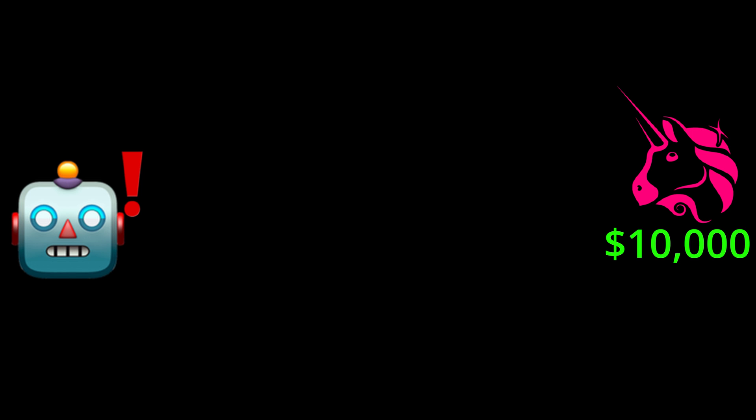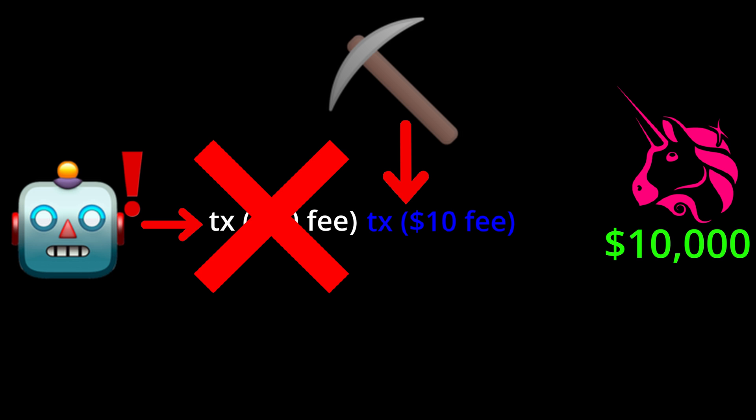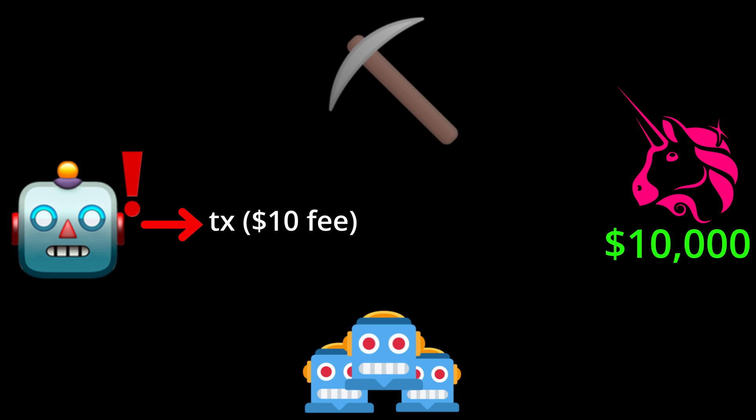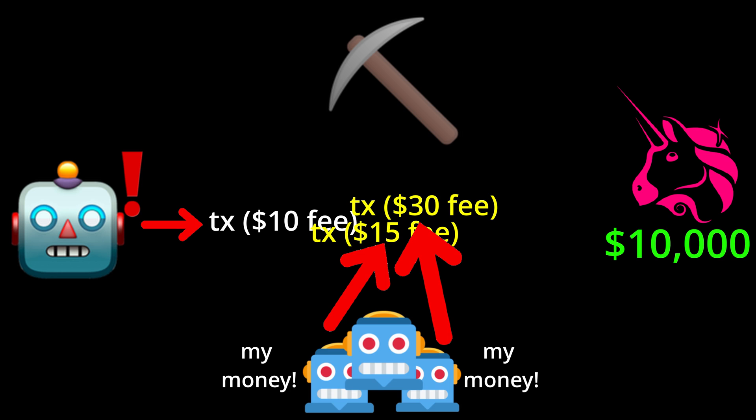Let's look at an example provided by Paradigm to show how MEV works. Imagine there is a $10,000 arbitrage opportunity available on Uniswap after a large trade causes price slippage. An arbitrage bot notices the opportunity and submits a transaction to capture it, offering a $10 transaction fee to the miner. In this case, one of two things may happen: a miner will copy and censor the arbitrageur's transaction to capture the opportunity themselves, or other bots will notice and bid a higher transaction fee, starting a bidding war — a Priority Gas Auction, or PGA.